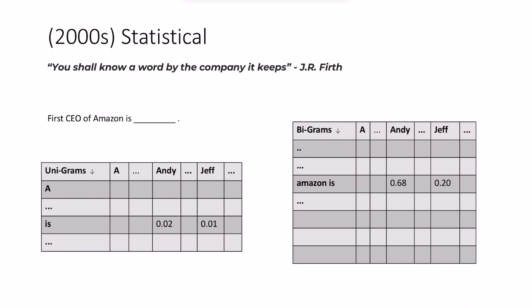Another approach for language modeling that was popular in the late 90s and early 2000s was statistical NLP which follows a well-known linguistic theory which was put forth in 1957 by J.R. Firth. Let's take an example to understand this.